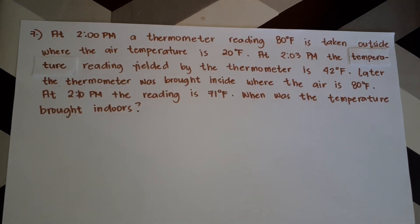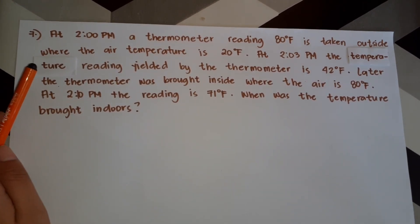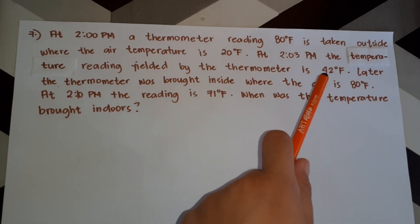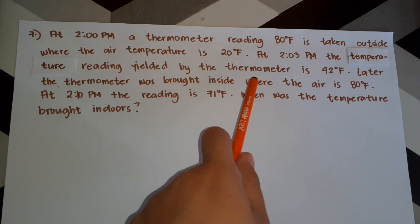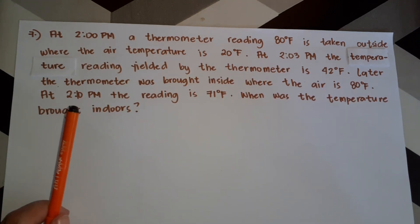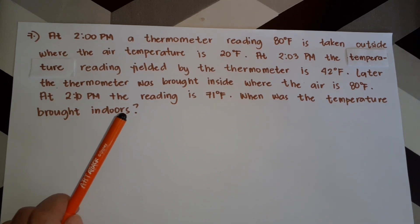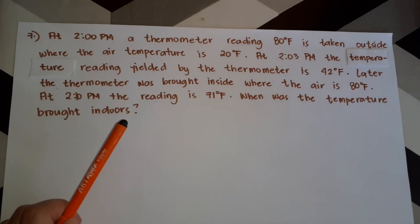In this video I am going to show you how to solve a Newton's Law of Cooling problem. At 2 PM a thermometer reading 80 degrees Fahrenheit is taken outside where the air temperature is 20 degrees Fahrenheit. At 2:03 PM the temperature reading yielded by the thermometer is 42 degrees Fahrenheit. Later the thermometer was brought inside where the air temperature is 80 degrees Fahrenheit. At 2:10 PM the reading is 71 degrees Fahrenheit. The question is: when was the thermometer brought indoors?